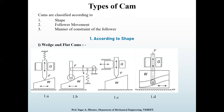Now we need to understand different types of cams. Cams are basically classified into three categories: first, based on shape; second, based on follower movement; and third, based on the manner of constraint of the follower. According to shape, there are seven types: wedge and flat cams, radial and disc cams, spiral cams, cylindrical cams, conjugate cams, globoidal cams, and spherical cams.